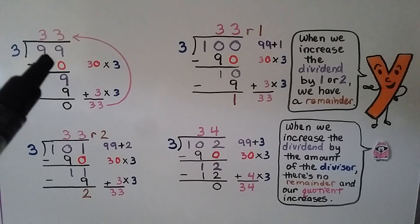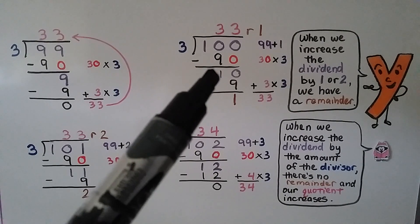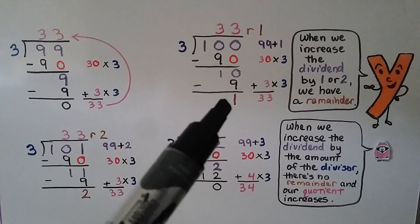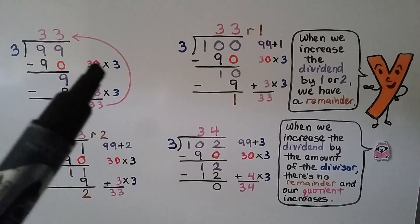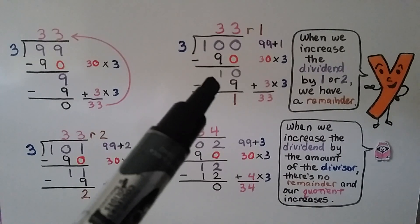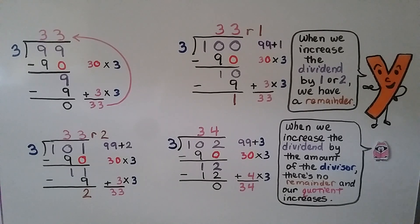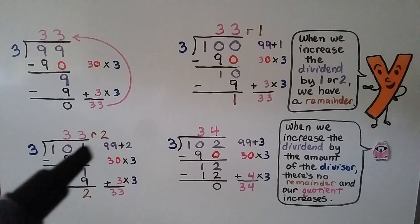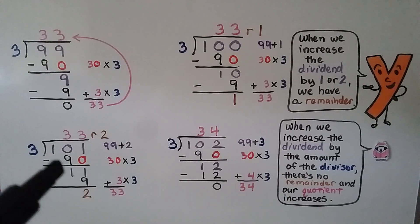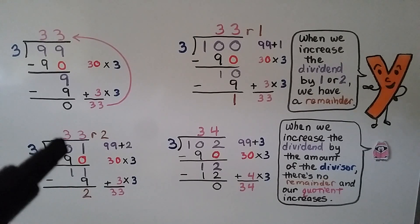When we increase the dividend from 99 to 100, after subtracting 90 we have 10 left over. That gives us a remainder of 1. We still have 30 plus 3 for the quotient of 33, but because the dividend was 1 more, it made us have 1 more left over when we subtracted the 90 — so now we have a remainder of 1. Similarly, with 101 (which is 99 plus 2), we get a remainder of 2: 101 minus 90 gives 11, and 3 times 3 is 9, leaving 2. So: 33 remainder 2.